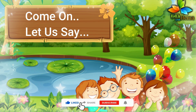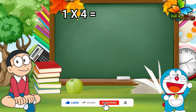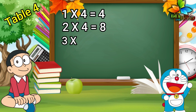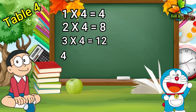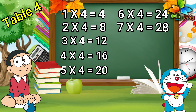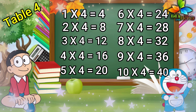Come on cookies, let us say. One four is four. Two fours are eight. Three fours are twelve. Four fours are sixteen. Five fours are twenty. Six fours are twenty-four. Seven fours are twenty-eight. Eight fours are thirty-two. Nine fours are thirty-six. Ten fours are forty.